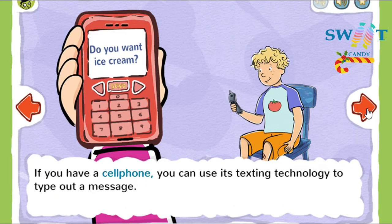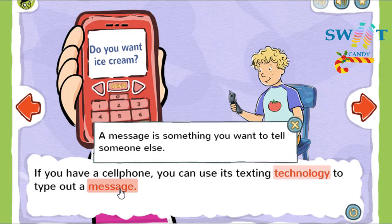If you have a cell phone, you can use its texting technology to type out a message. A message is something you want to tell someone else. Your teacher could send a message to your parents by sending home a note.